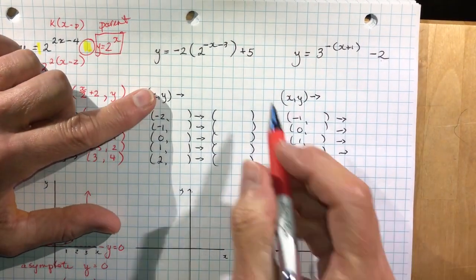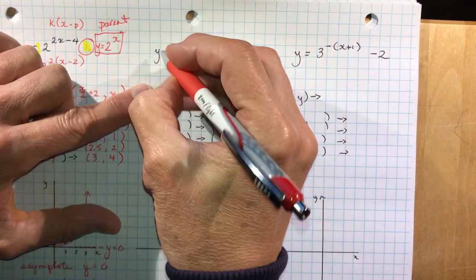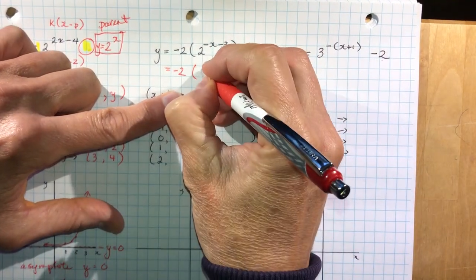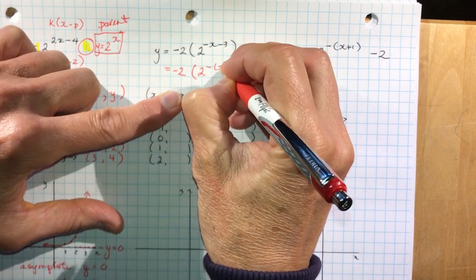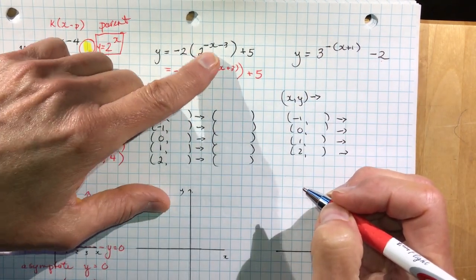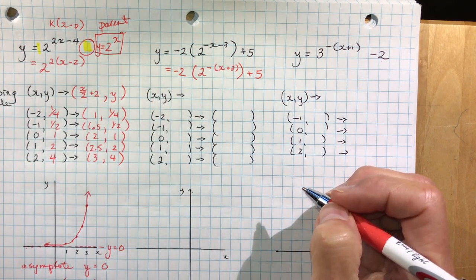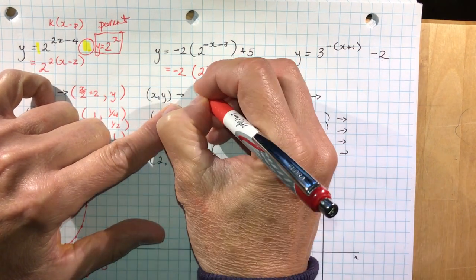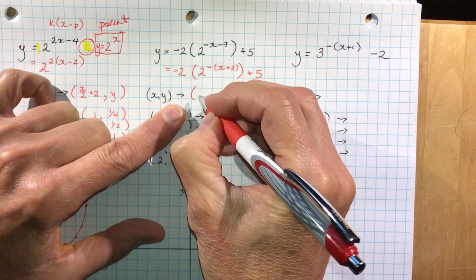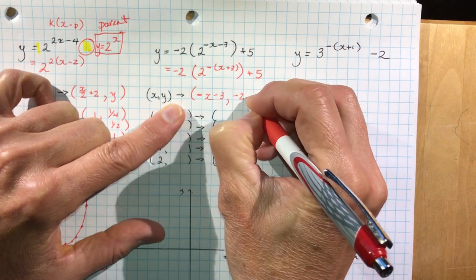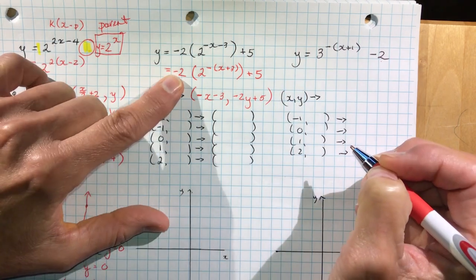Let's go to the next one. We have minus 2 times 2 to the negative x minus 3, plus 5. Again, the first thing you should notice is that the coefficient of x is not 1 — it's negative 1. So I need to factor out the negative before I do the transformations. Now, what happens to x and y? The x: I divide by negative 1, or multiply by negative 1, so it's going to be a negative x. This says plus 3, so it becomes minus 3. And the y's are always the easy ones — you just read them. Minus 2y plus 5.